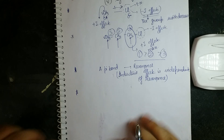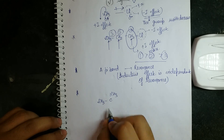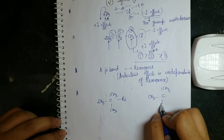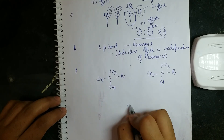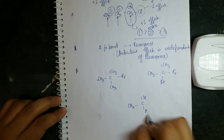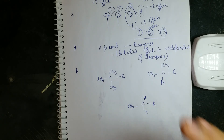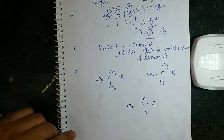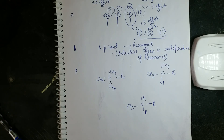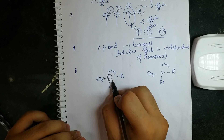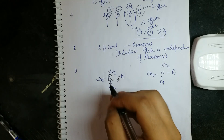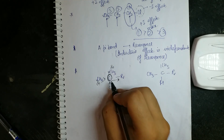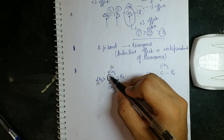Now let's compare plus I effect. Consider three compounds: a tertiary carbon with three CH₃ groups, a secondary carbon with two CH₃ groups, and a primary carbon with one CH₃. Each CH₃ donates electron density to the central carbon, increasing electron density there. Delta positive charges generate on each CH₃, and delta negative generates on the central carbon.